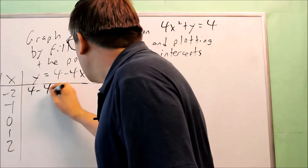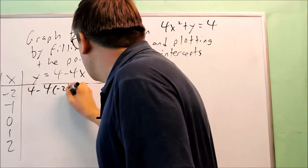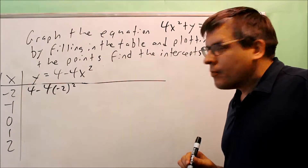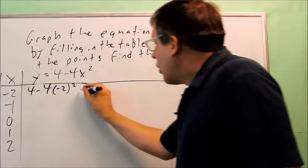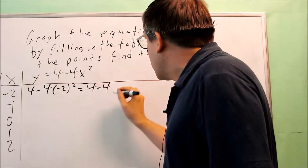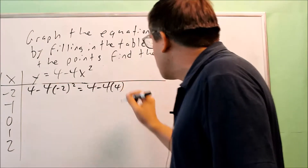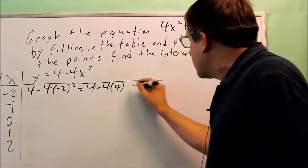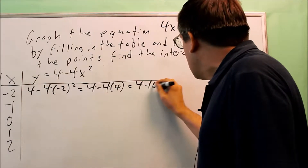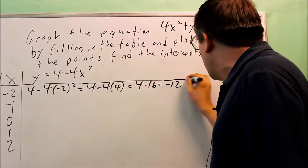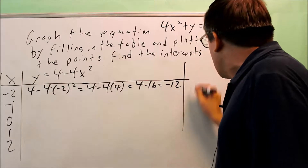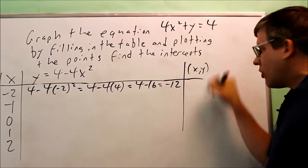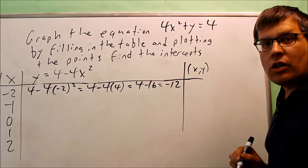I put in negative 2 in place of x. Don't forget to square it. Working it out: negative 2 times negative 2 is positive 4, so I get 4 minus 16, and that's going to be negative 12. Now I want to create an xy column so I can have all these listed out in one spot.